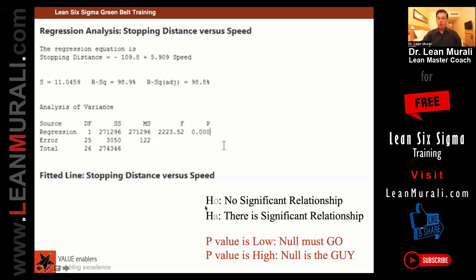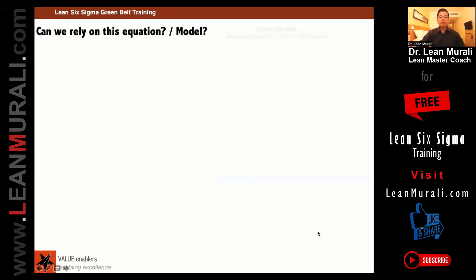So the null goes, rejected the null hypothesis in favor of the alternate hypothesis and that is a significant relationship. So can we rely on this model is a question.